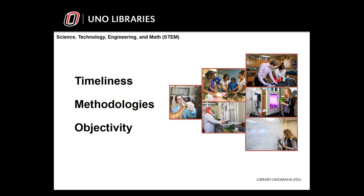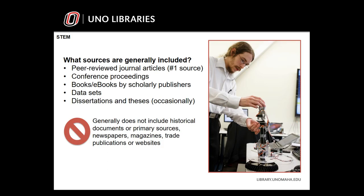This is why STEM places such a high value on peer-reviewed journal articles — to make sure that the methodology is replicable and the results reported are sound. STEM research focuses on a short list of sources, and peer-reviewed journal articles are generally the primary source of information. You might also use conference proceedings and books by scholarly publishers, as well as outside datasets to run tests or try out new software. Dissertations and theses are occasionally used when there is not a lot of published research because the research area is still developing. Generally, STEM researchers do not include historical documents, primary resources, newspapers, magazines, trade publications, or websites, as they may not be timely or scholarly in nature.